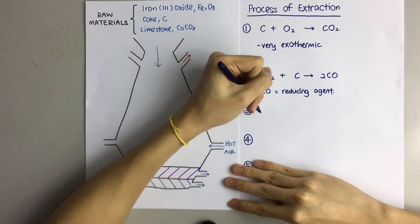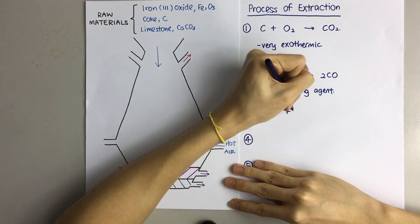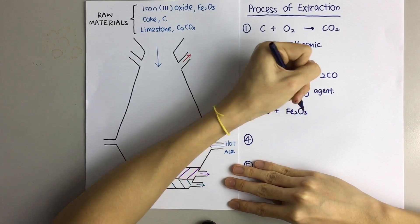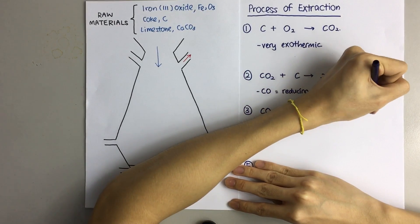Thirdly, carbon monoxide is going to react with iron 3 oxide to form iron and carbon dioxide.